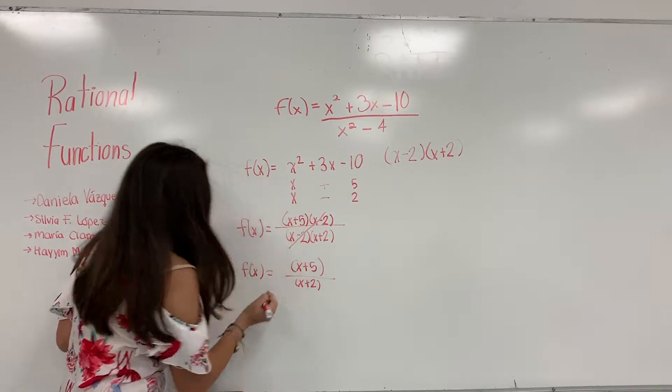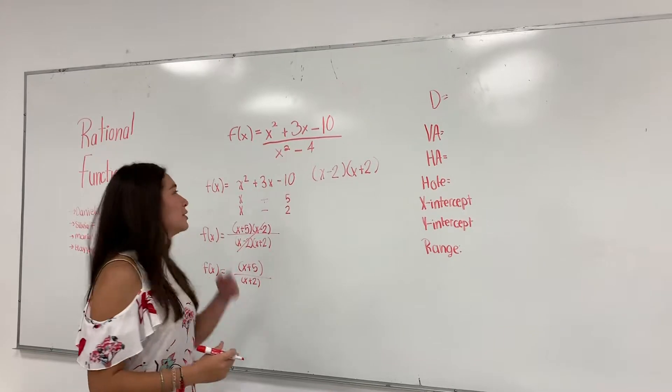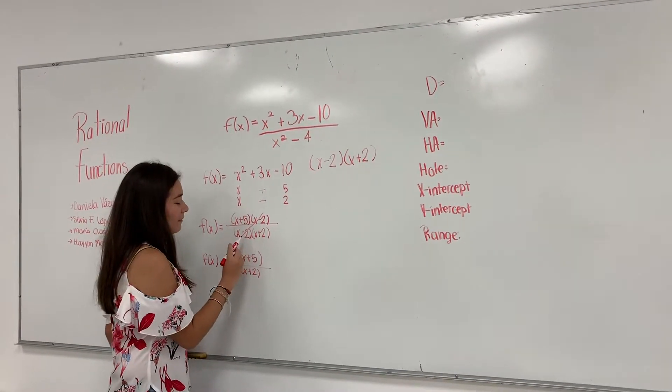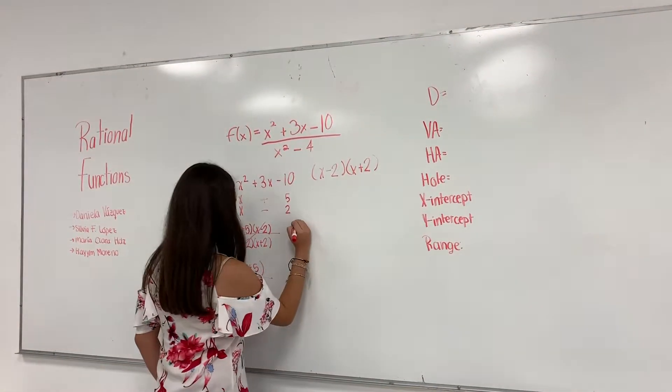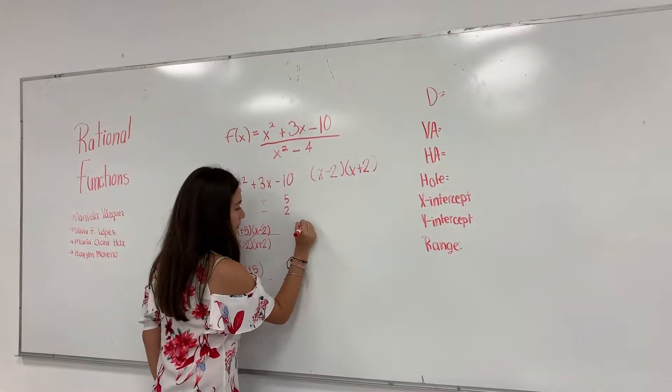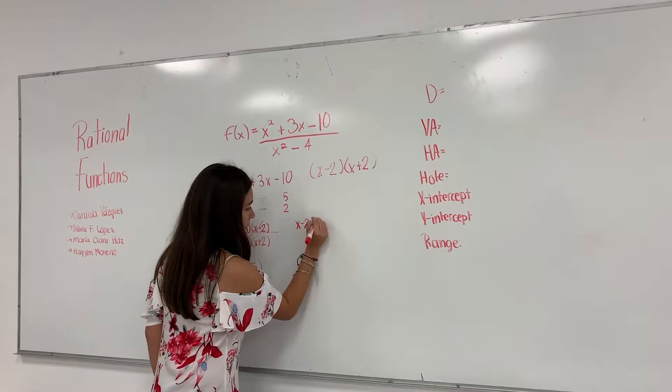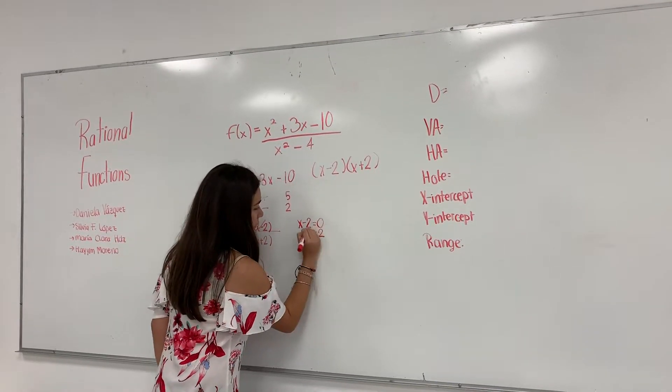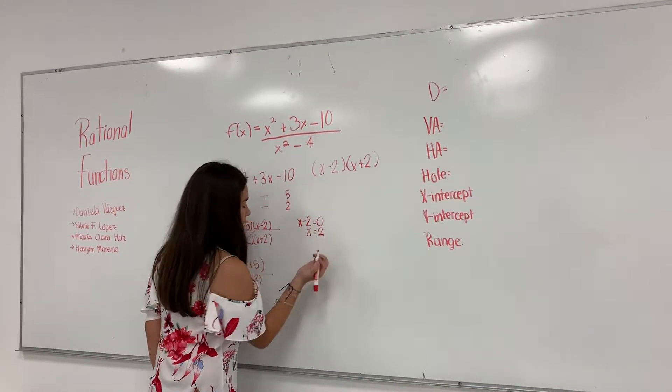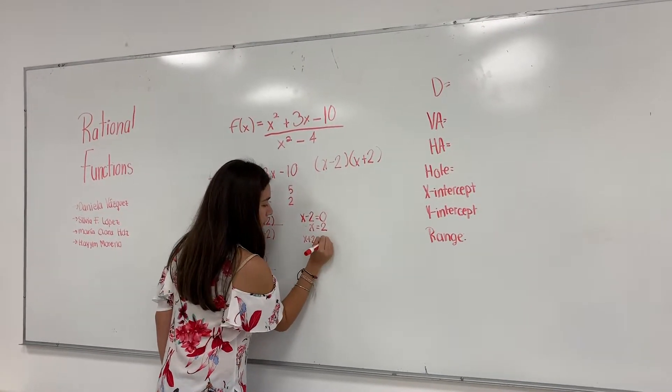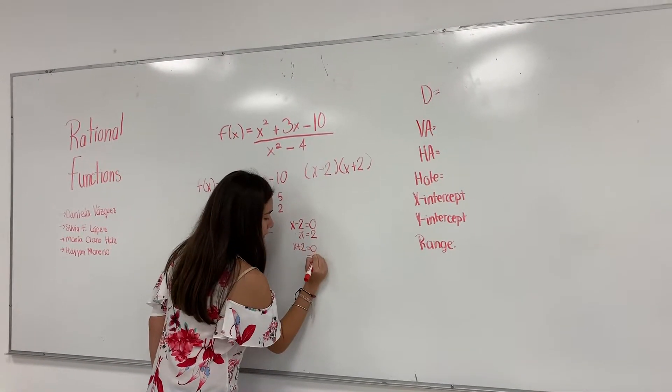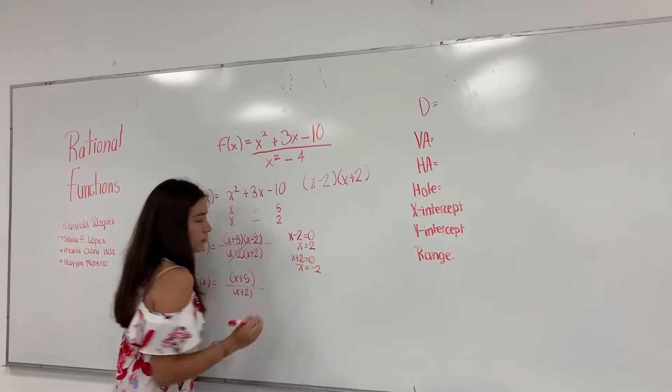This is the simplified form. To find the domain of this rational function, we need to find the value of x by solving for x in the denominator. So the denominator consists of x minus 2 equals 0, which equals 2. And another one is x plus 2 equals 0, which will equal x to minus 2.